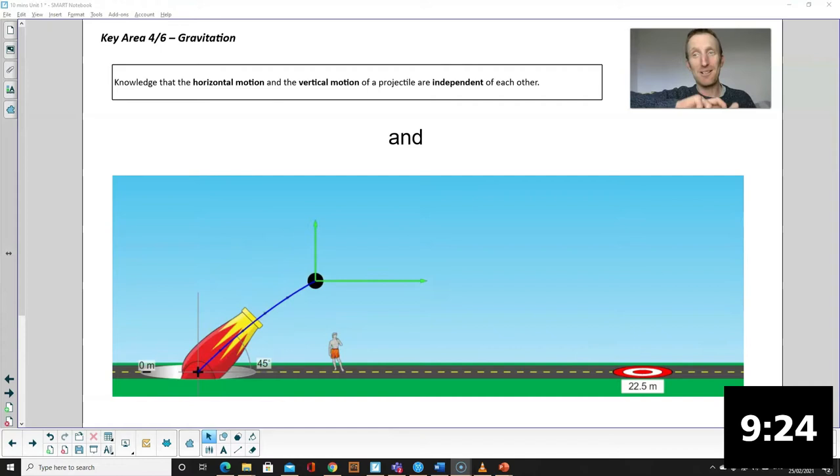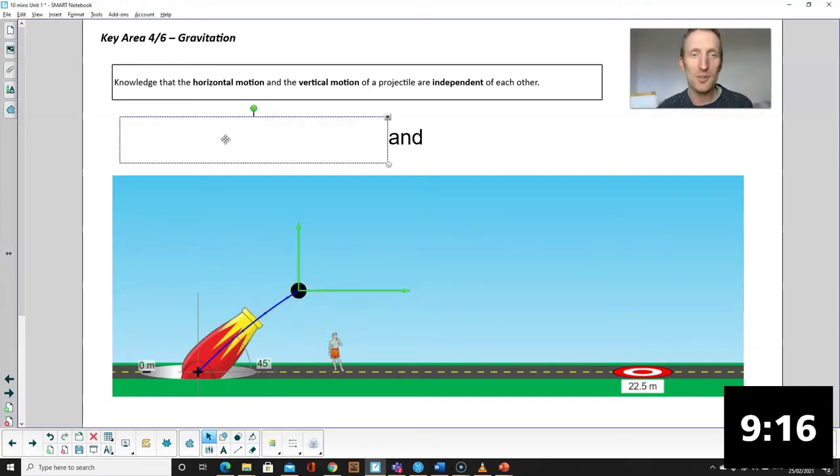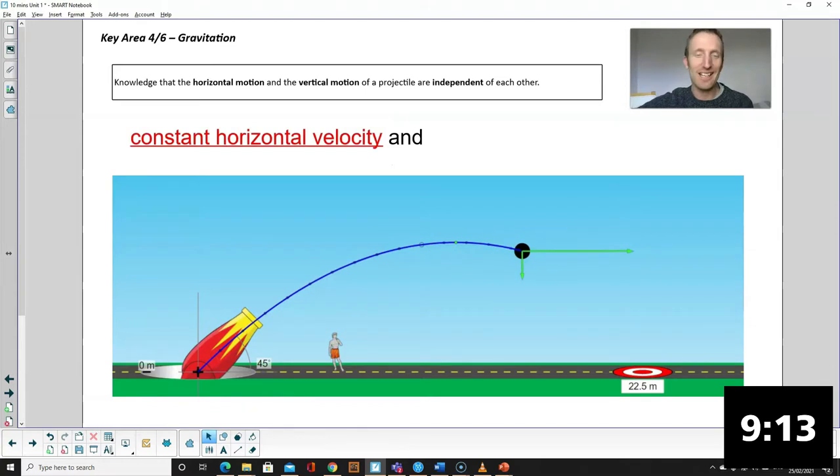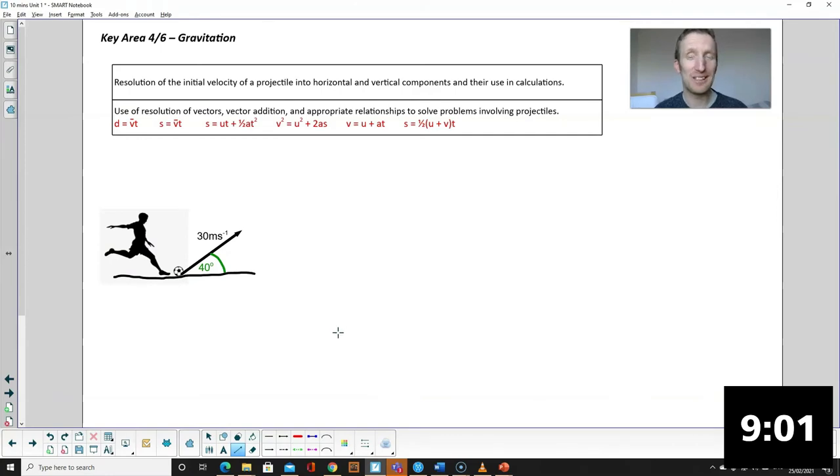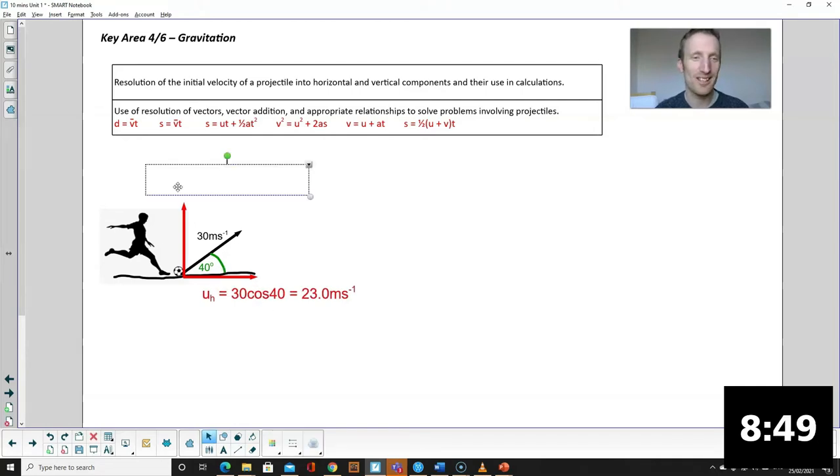Okay, we're now going to look at projectiles. That's where something is moving in a curved path, so two dimensions, and we think of the two components, the horizontal and vertical, separately. The words we use are constant horizontal velocity, in other words the horizontal velocity stays the same, and constant vertical acceleration, because gravity acts in the vertical direction.